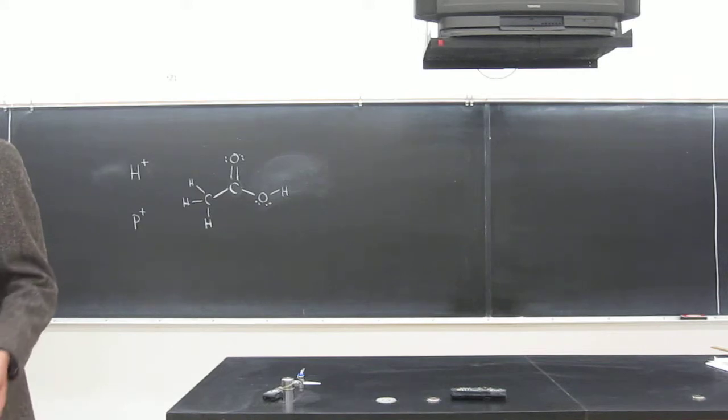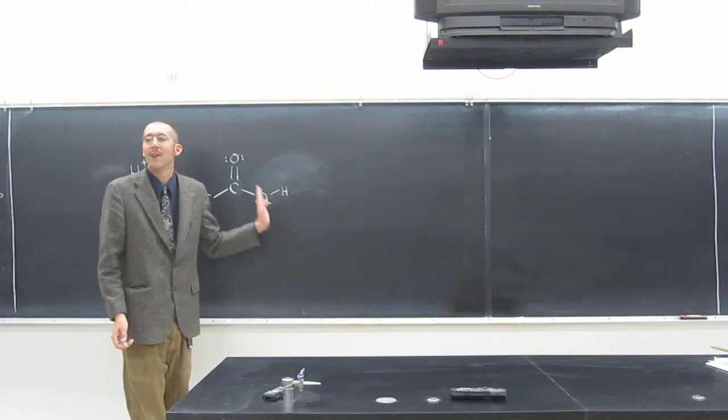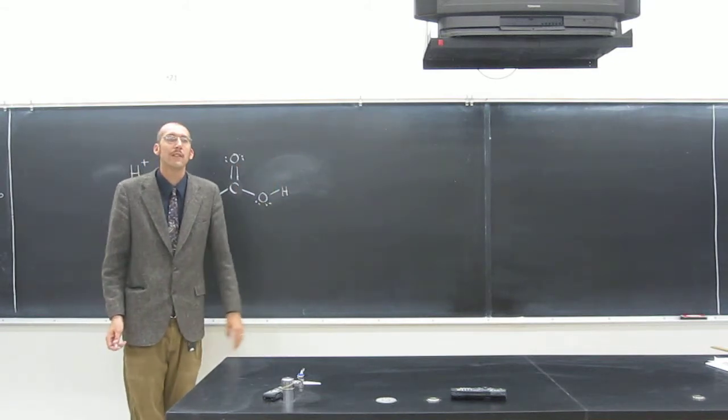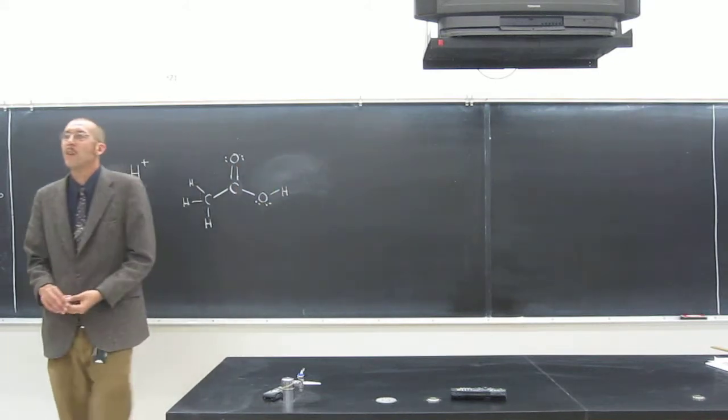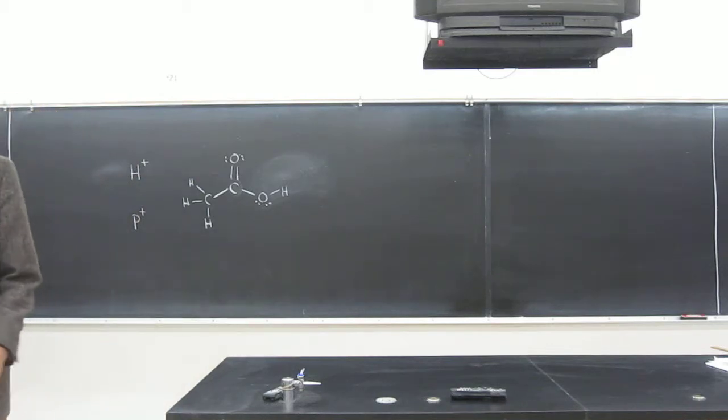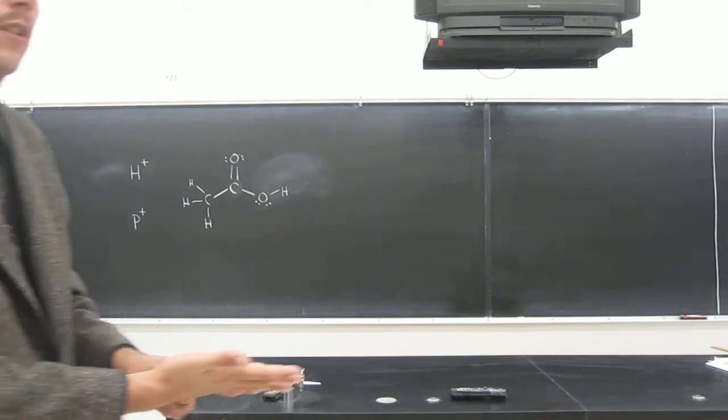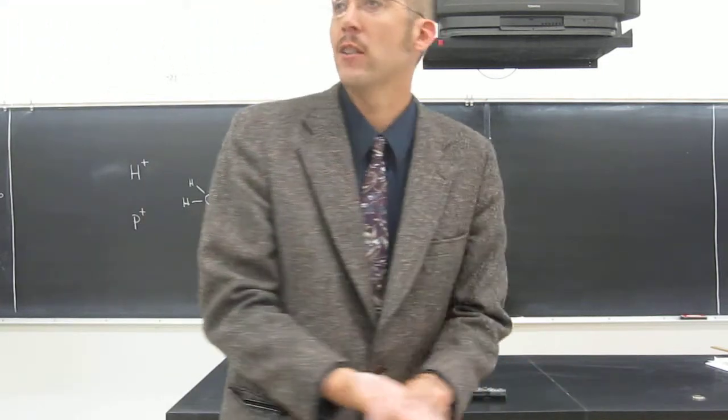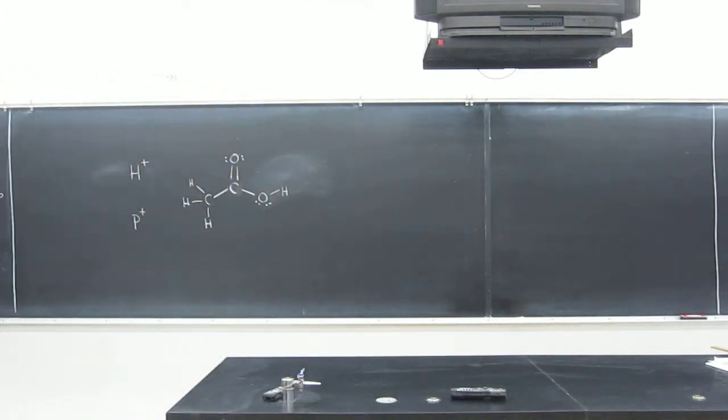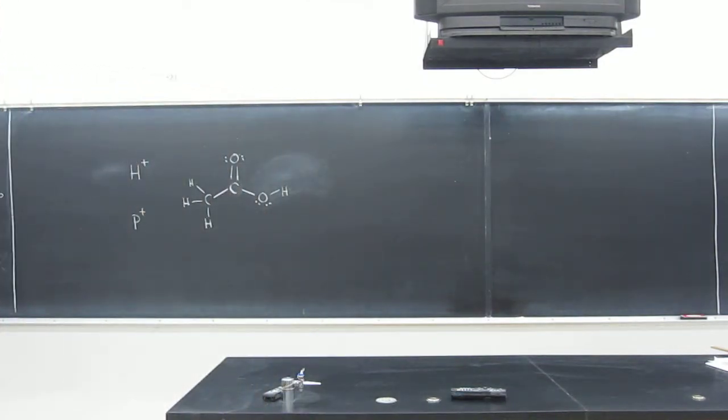Acids are things that, well, Bronsted-Lowry acids are things that donate protons to other things. In fact, when you stick your hand in acid and it burns you, it's because there's protons being donated to your finger. That's the reaction that's going on. That's how you know there's a reaction going on because you're feeling that burn.